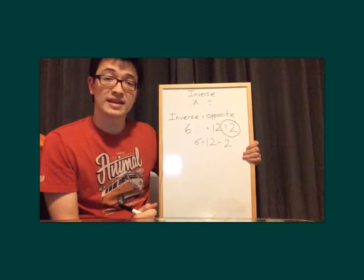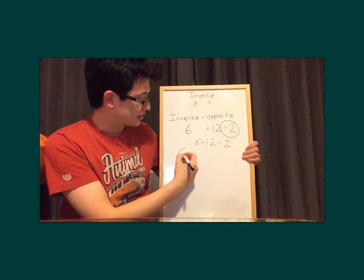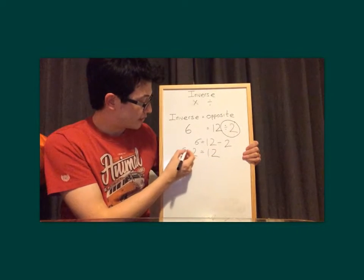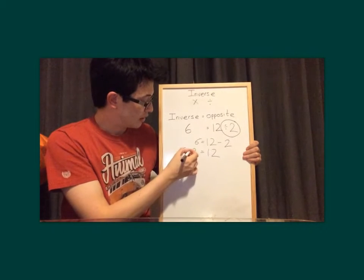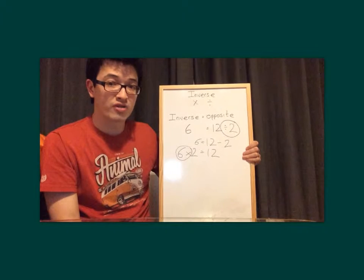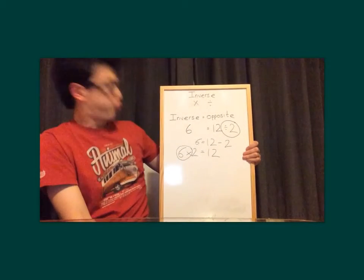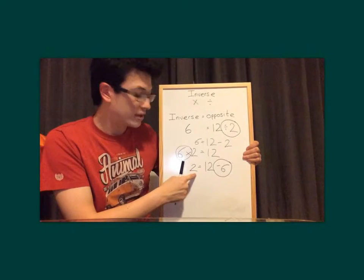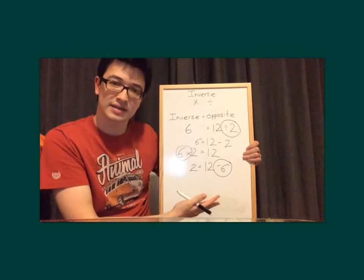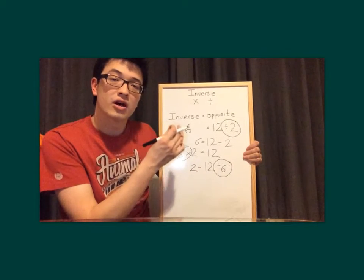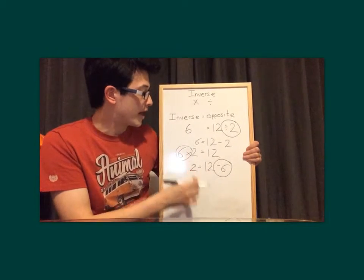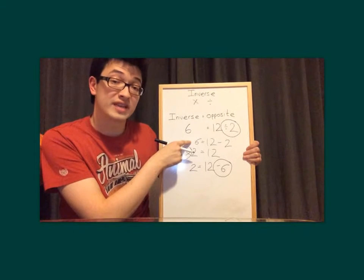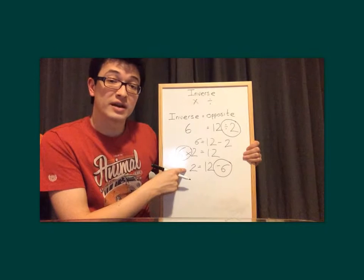We could even have done it with the 6 as well. So if we had 6 times 2 equals 12 and wrapped that magic bubble around the 6 — and also around the operation, don't forget — and blew that one really hard to the other side of the equal sign, we'd get: 2 is the answer to 12 divided by 6. So the inverse of 6 times 2 equals 12 could either be 12 divided by 2 equals 6, or 12 divided by 6 equals 2.